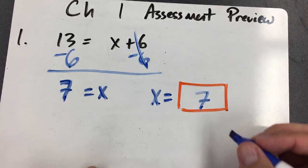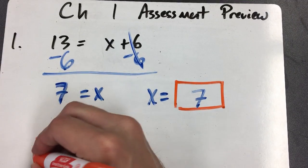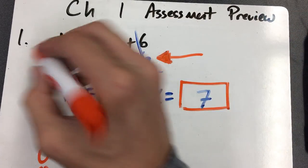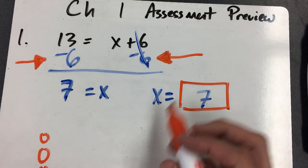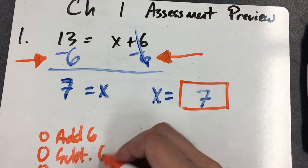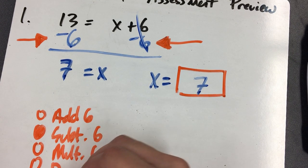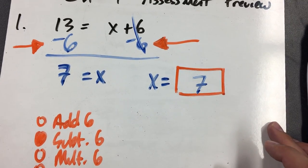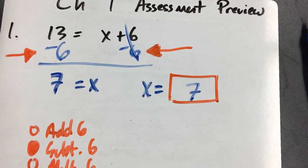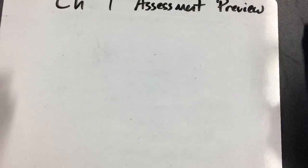Then there will be a question underneath it asking which step did you use to solve the equation. It's going to have four choices. Just look and see what you did on both sides of the equal sign when you did inverse operations. On my example, I subtracted 6 on both sides, so the choices might be add 6, subtract 6, multiply 6, or divide 6. You're going to choose subtract 6. That's your answer for number one — it should be a very easy question.